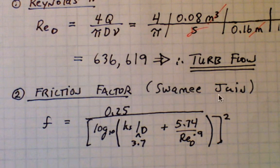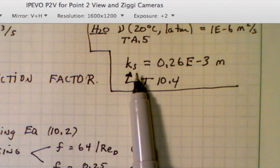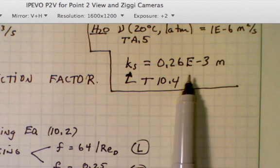I've written the Swamee-Jain correlation here. In this equation, I need the sand roughness height k sub s, and I looked this up in table 10.4. Roughness height is 0.26 times 10 to the minus 3 meters.